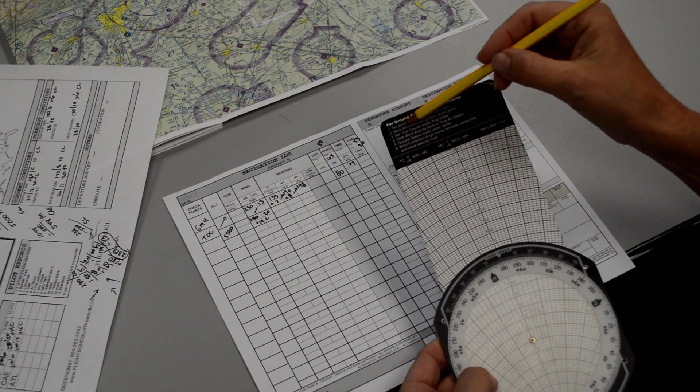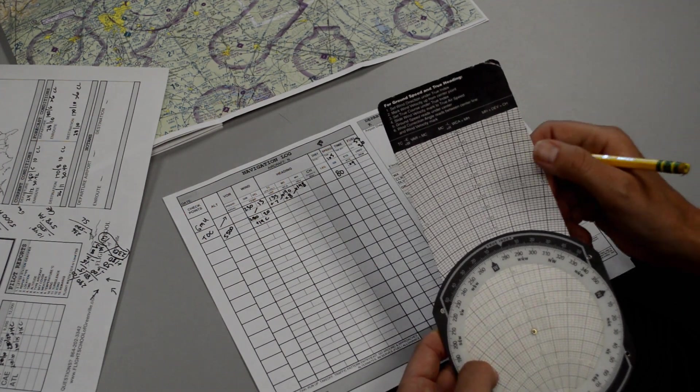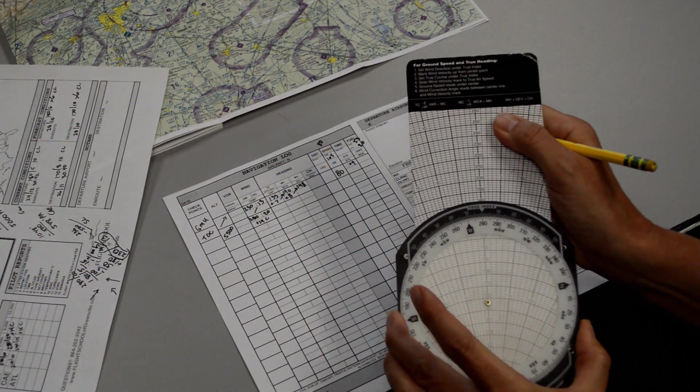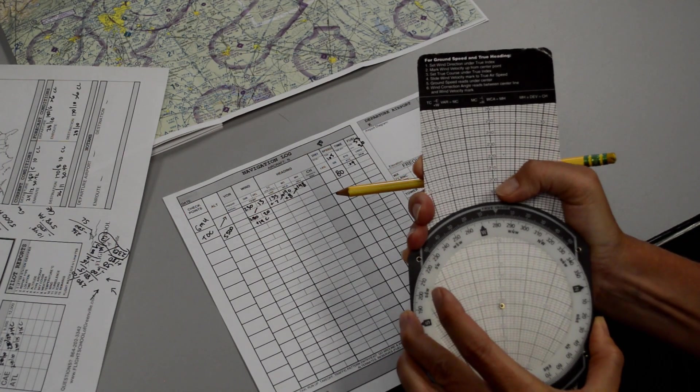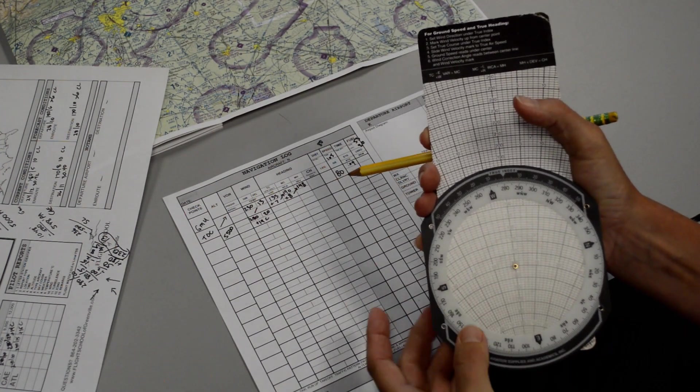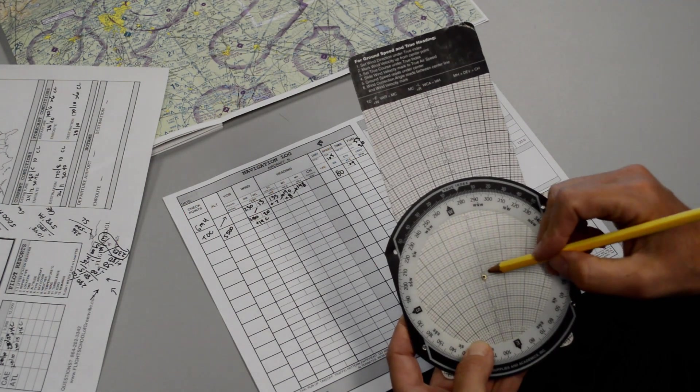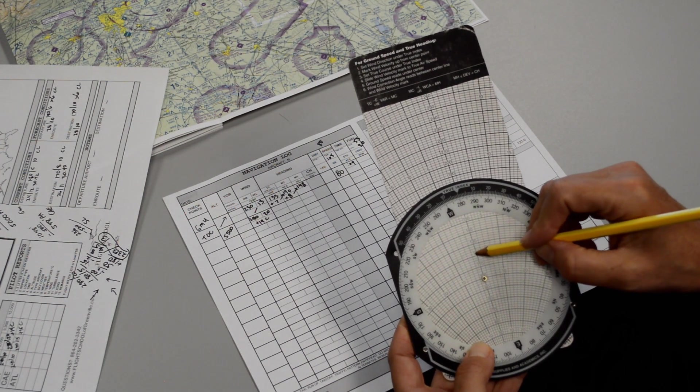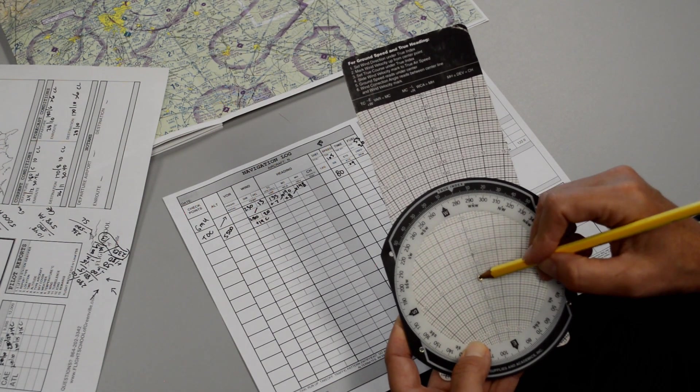Number 2 says mark wind velocity up from the center. Remember we always start at 100. The center grommet starts at 100. And that makes it easy for us to count. 10, 20. So we put our wind mark 20 degrees up.